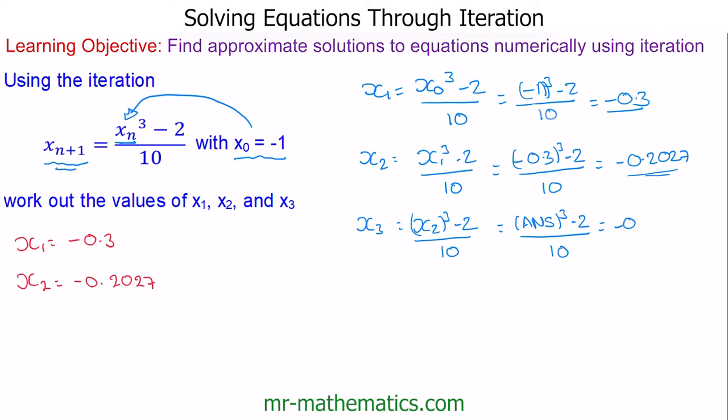Now we can work out x₄ very simply by pressing equals again, giving us -0.20081, and x₅ = -0.200809. You can see we're converging on a solution which is approximately -0.2008.